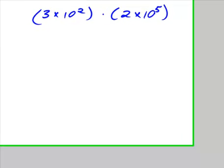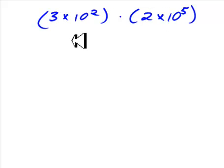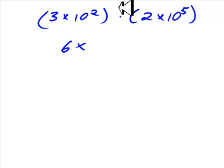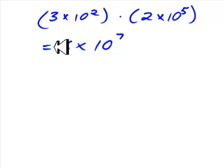Here we have two scientific notation numbers, 300 and 200,000, that we're going to multiply together. The rule is that you take the coefficients and multiply them together, so 3 times 2 gives us 6. And 10 to the 2 and 10 to the 5 — you add the exponents: 2 plus 5 gives us 7, so we say 10 to the 7. And that's our answer for this multiplication problem.